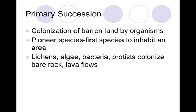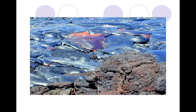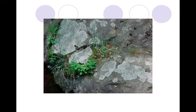Examples of pioneer species could be lichen, algae, bacteria, protists. These colonize bare rock, things like lava flows. Here's a picture of a lava flow and if you look closely you can see some of that in the igneous rock there. But when the lava comes, it covers everything and just leaves rock. So when it's on barren or rock-like land, it is considered primary succession.